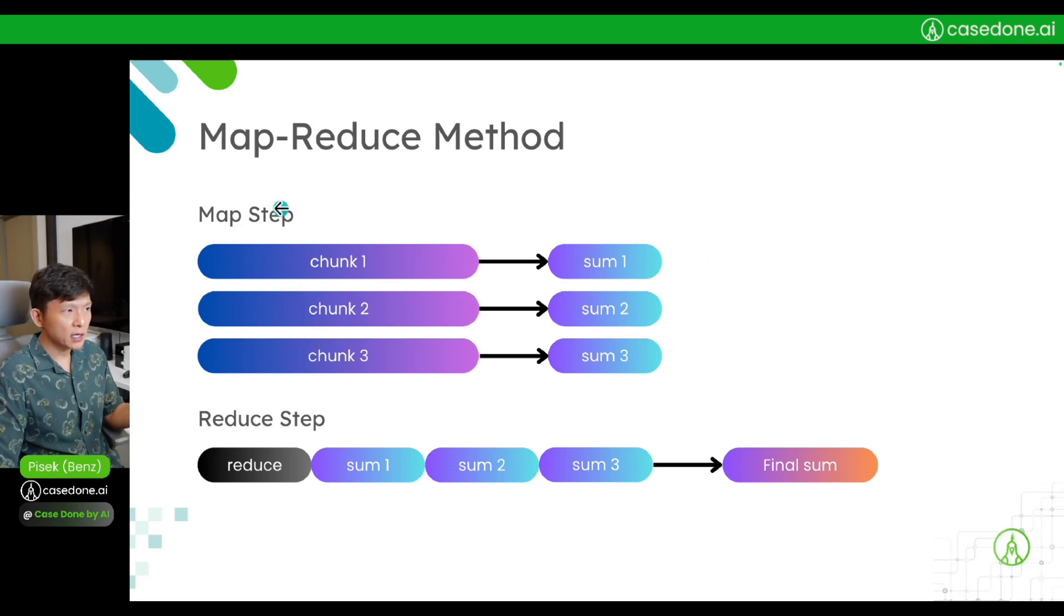So this map-reduce method involves two major steps. The first one is the map step - you map a chunk to a summary. In the second step, the reduce step, you stack up and ask the model to merge or create a final summary out of all these summaries. The way I stack them up horizontally is for you to see that the more chunks you have, the longer this input length to the LM will be.